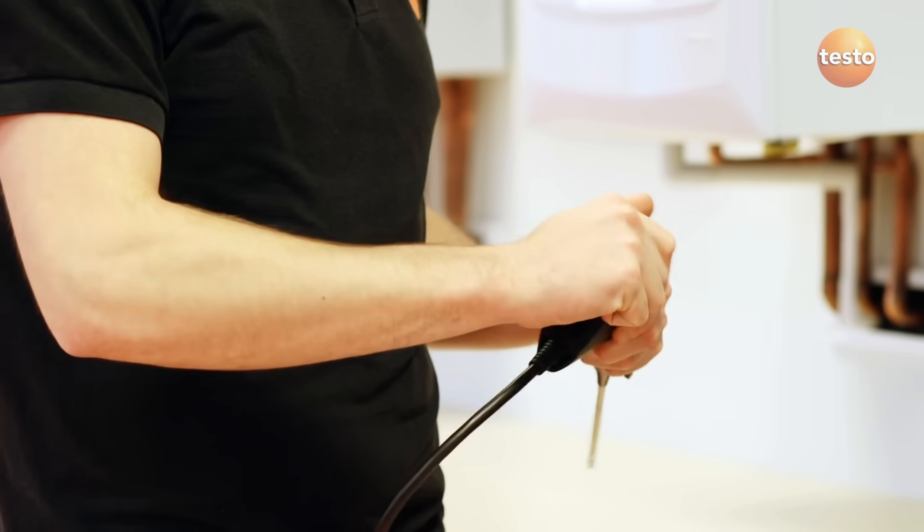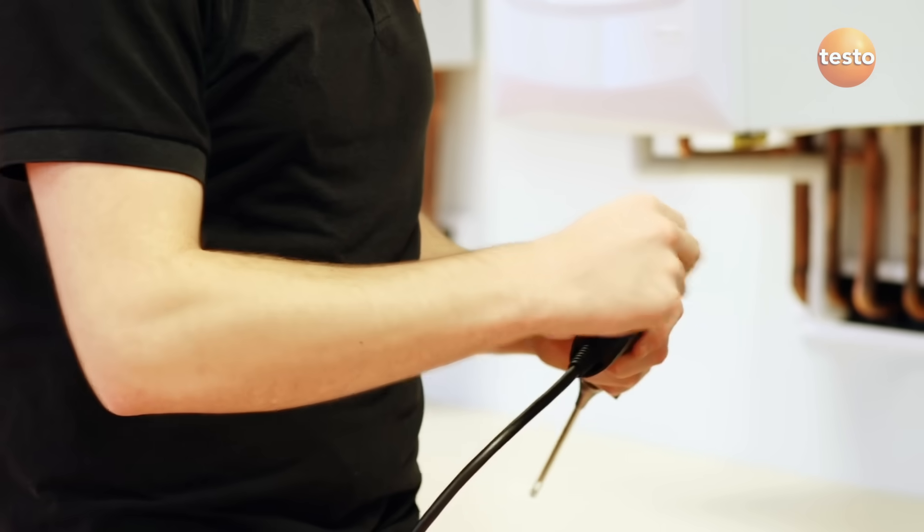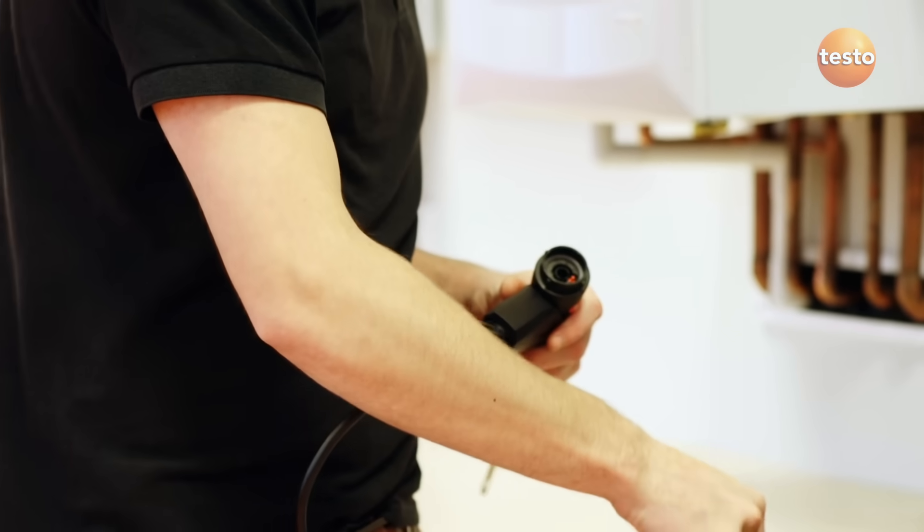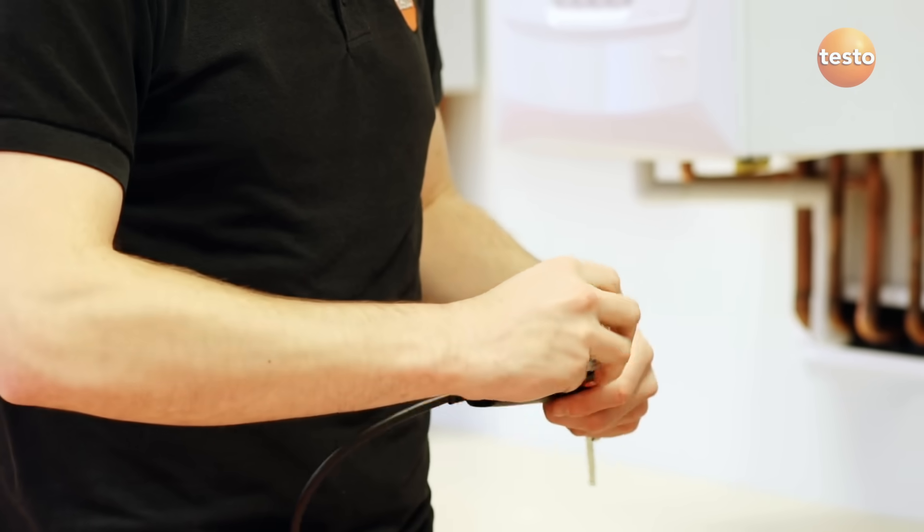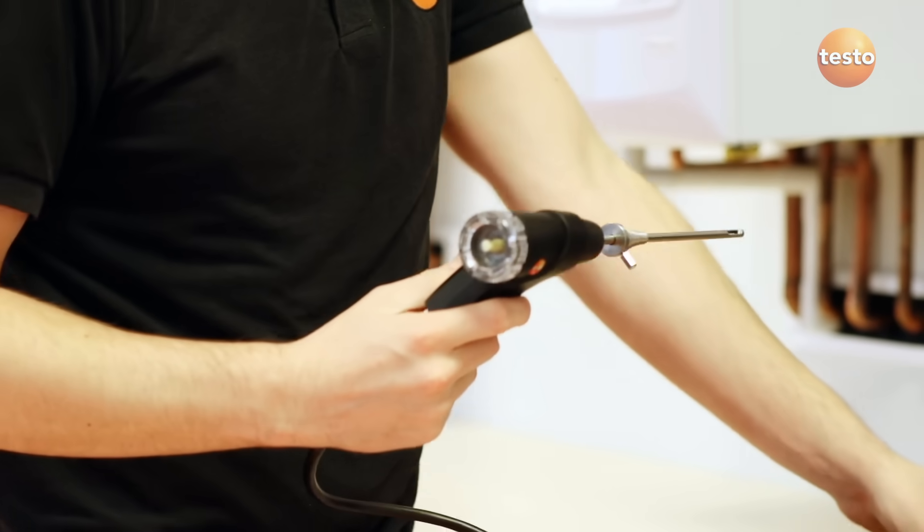Regularly check the filter on the probe handle, which is really easy to do on the 310. If the filter is dirty, then throw it away for a new one. If it's wet but clean, you can fit a dry one and keep the old one to dry out.